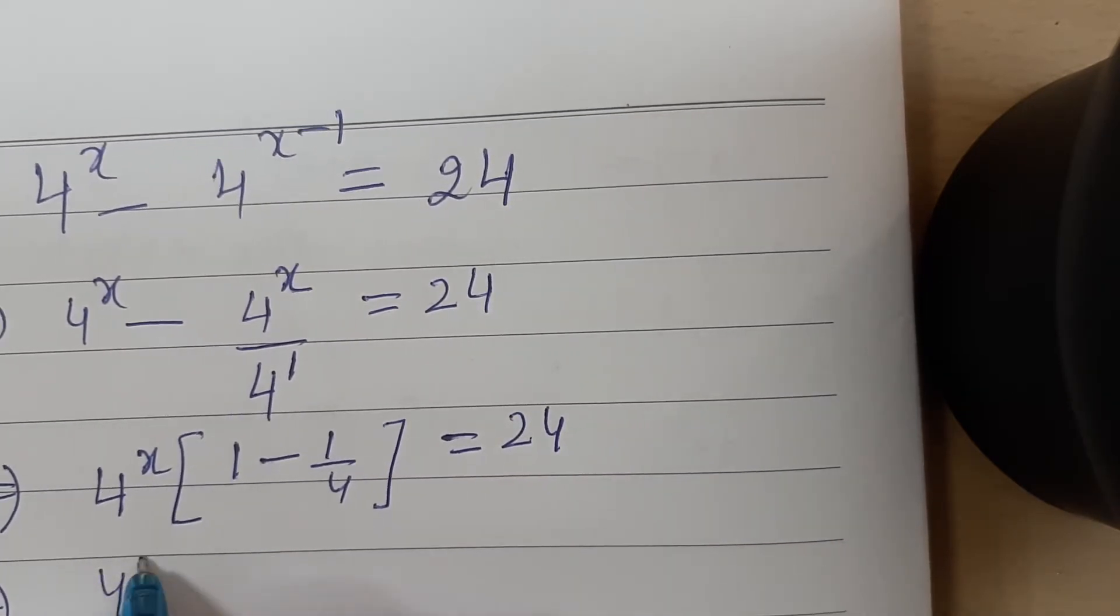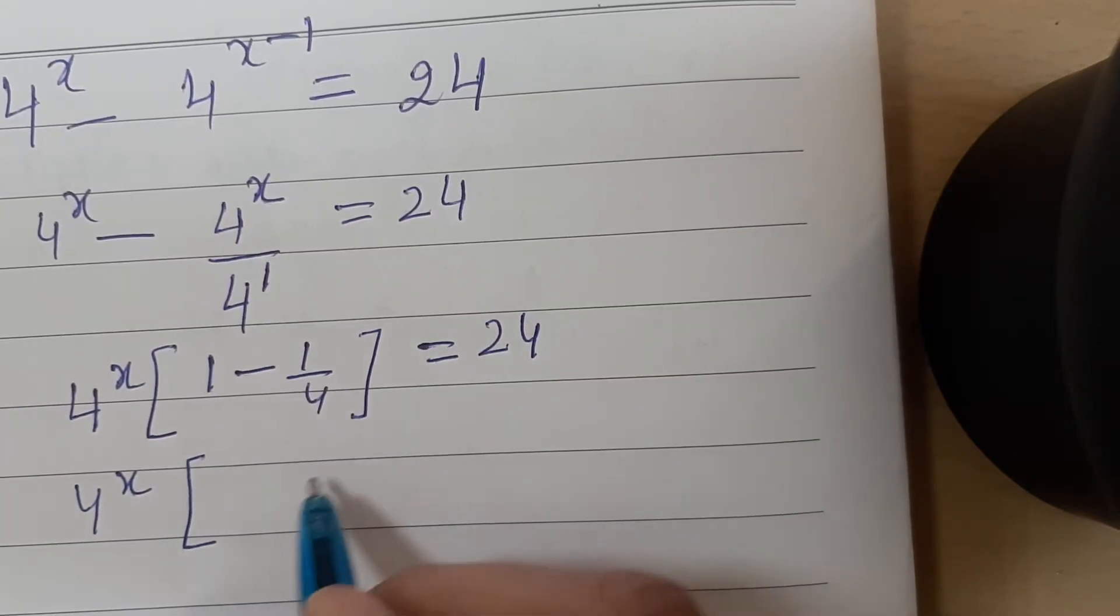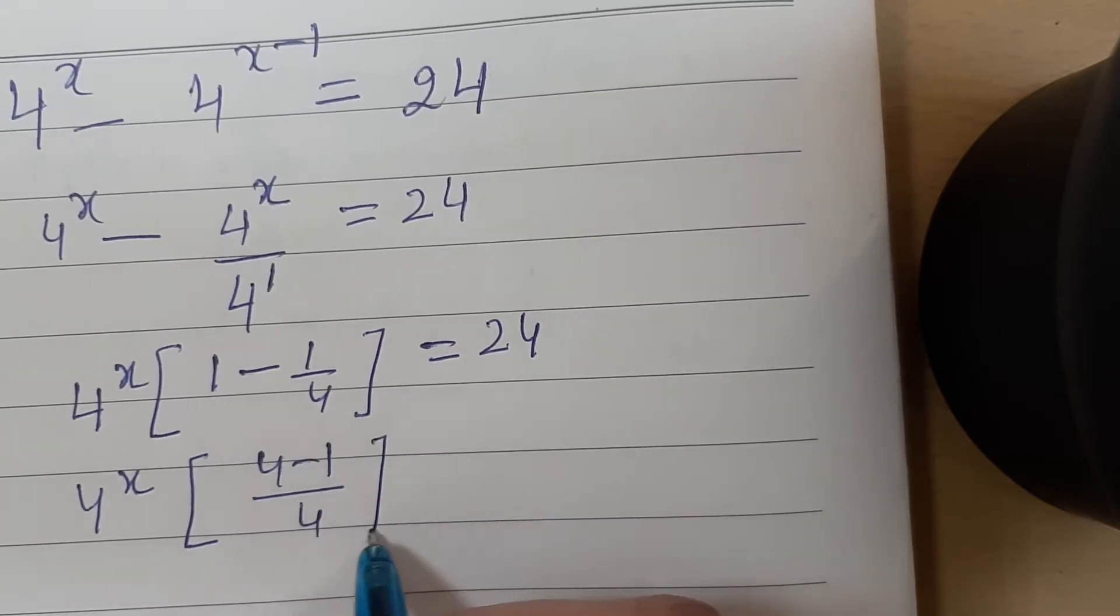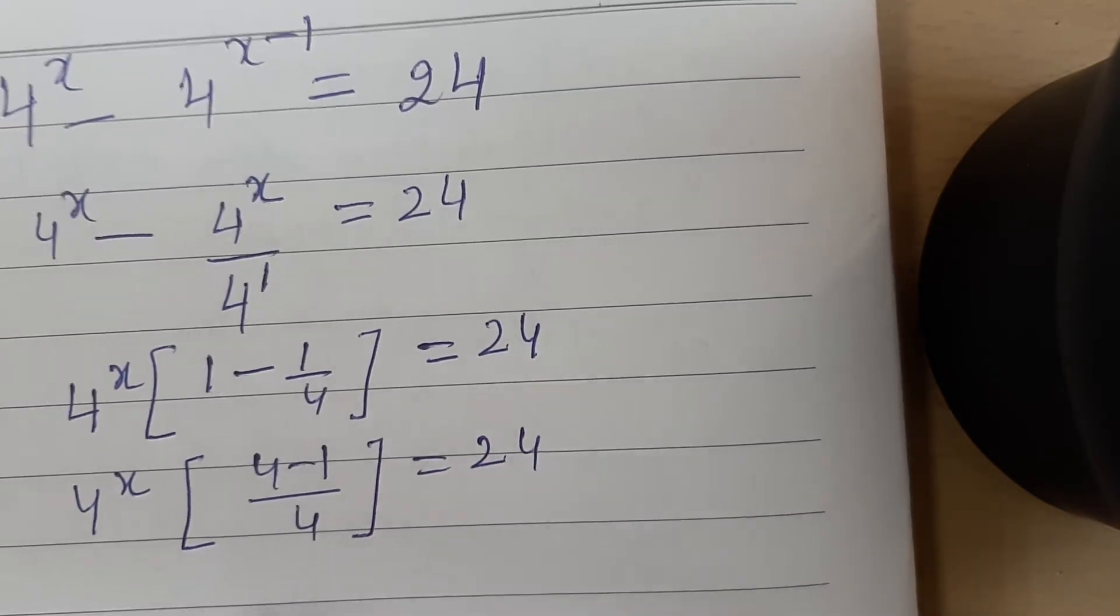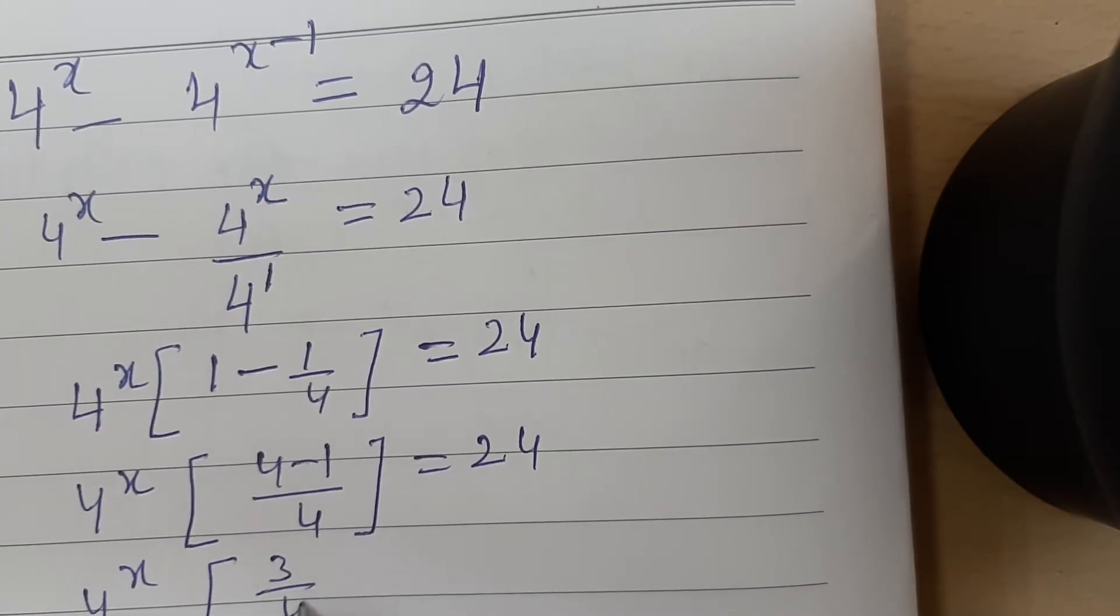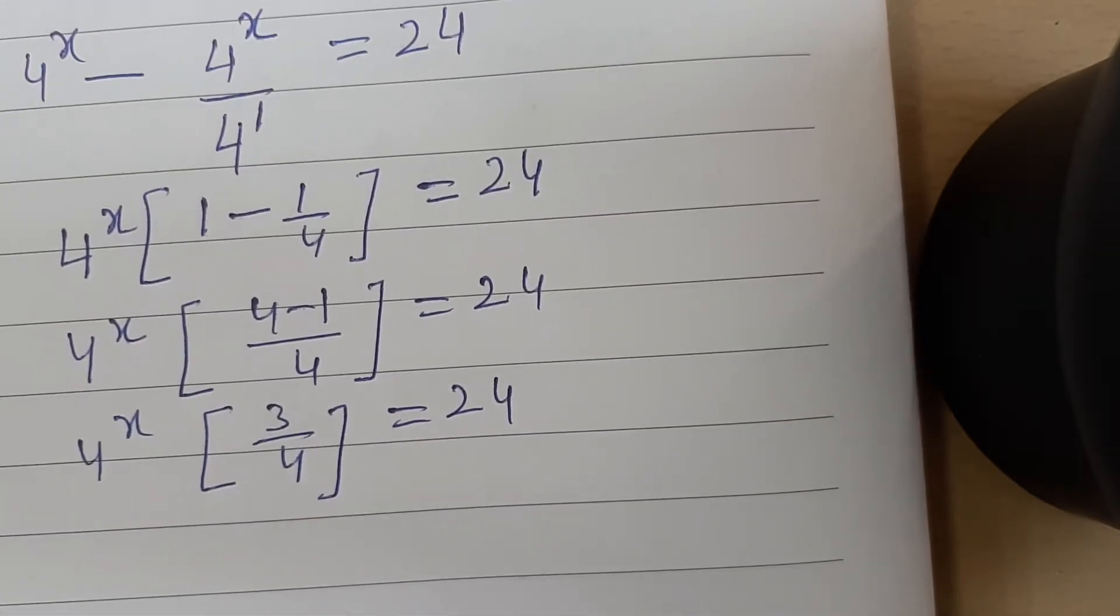Now simplify this. 4 to the power x, now 1 minus 1 by 4 is 4 minus 1 divided by 4. So this is equal to 24. This implies 4 to the power x times 3 by 4 equals 24.